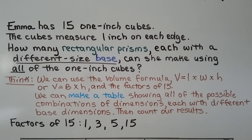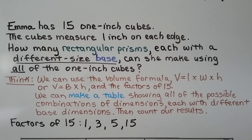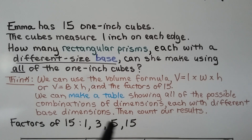Emma has 15 one-inch cubes, and the cubes measure 1 inch on each edge. How many rectangular prisms, each with a different size base, can she make using all of the 1-inch cubes? We can use the volume formula — volume equals length times width times height — and the factors of 15, because she has 15 cubes. The factors of 15 are 1, 3, 5, and 15. 1×15 is 15, and 3×5 is 15.